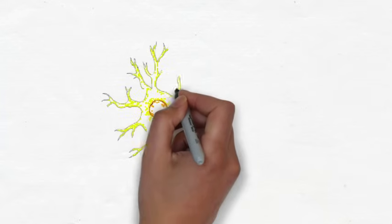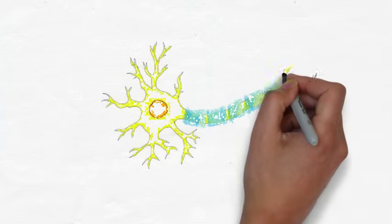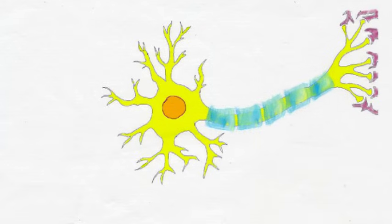This is a generic image of a neuron. Neurons actually come in all shapes and sizes, but this is the prototypical version of a neuron that you'll often see in a textbook.